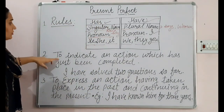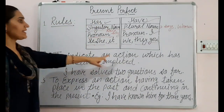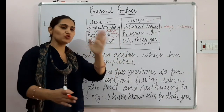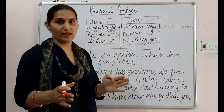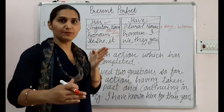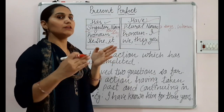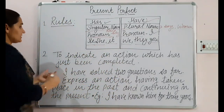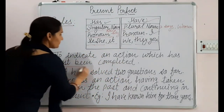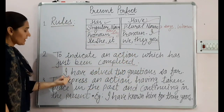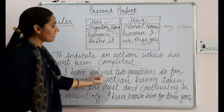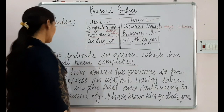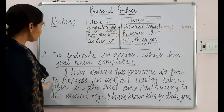The first usage rule: present perfect tense is used to indicate an action which has just been completed — jo kaam abhi abhi khatam hua hai. For example: 'I have solved two questions so far.' The word 'just' or 'so far' signals that the task was recently completed.